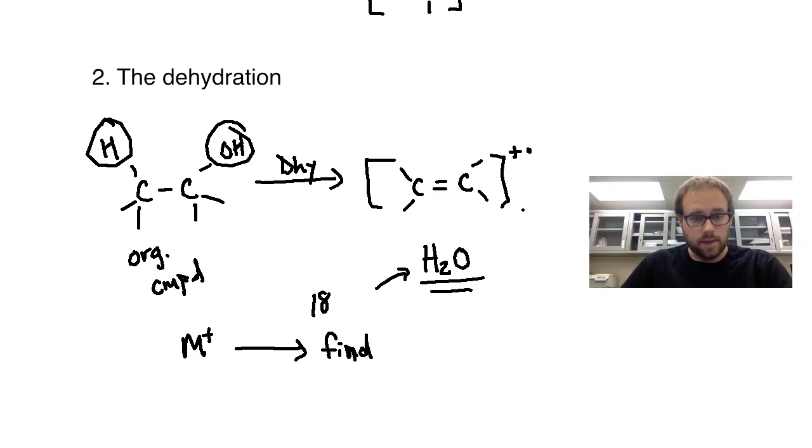So if you can find a peak that is 18 less than your M plus peak, that means that it likely was an alcohol. So you're going to find M plus minus 18. So whatever that might equal, if you see a peak there, basically M plus, whatever the mass value is for M plus, and you remove that 18 mass fragment, whatever that comes out to, if you see a peak there, then you most likely have dehydrated water. And therefore, you have an alcohol of some sort that's sitting around.